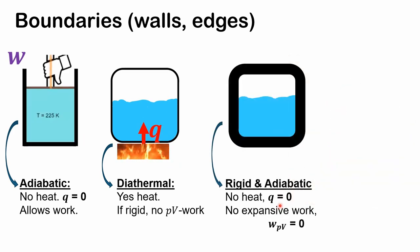If our boundary is rigid, it can't expand or contract, so there's no work. So this system is essentially isolated. If there's no other work allowed, we could maybe have electrical work or other types of work, however.